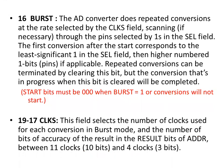Bit 16 is the burst bit. The AD converter does repeated conversions at the rate selected by the CLKDIV field, scanning through the pins selected by 1s in the SEL field. The first conversion after start corresponds to the least significant 1 in the SEL field, then higher-numbered 1-bit pins if applicable. A repeated conversion can be terminated by clearing this bit, but any conversion in progress when this bit is cleared will be completed. The START bits must be 00 when the burst bit is 1, or conversion will not start.